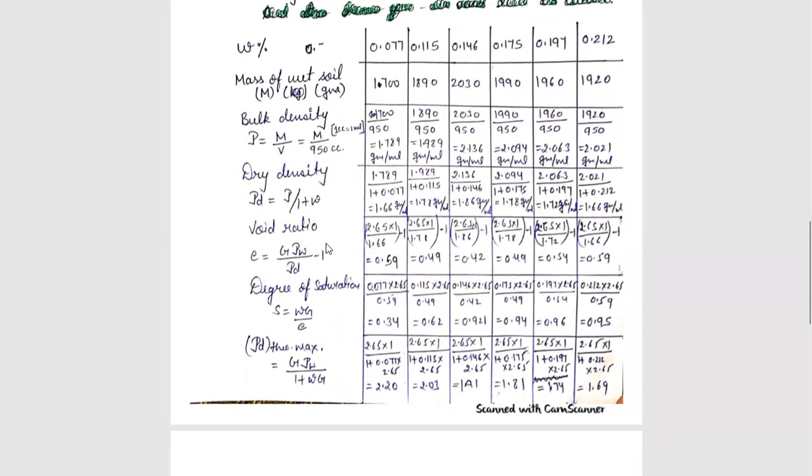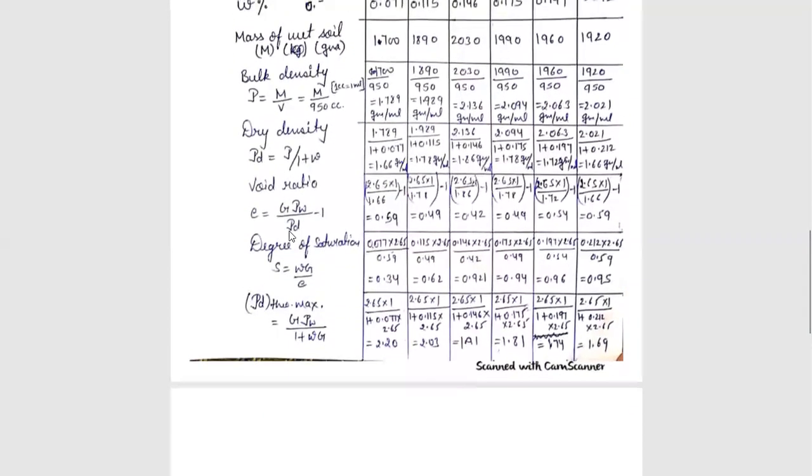Now we have asked void ratio E. The formula for dry density is G rho w upon rho d. In this formula, we will keep values of dry density and we will get the void ratio of each particular percentage of water content. We will find out void ratio in particular water content.